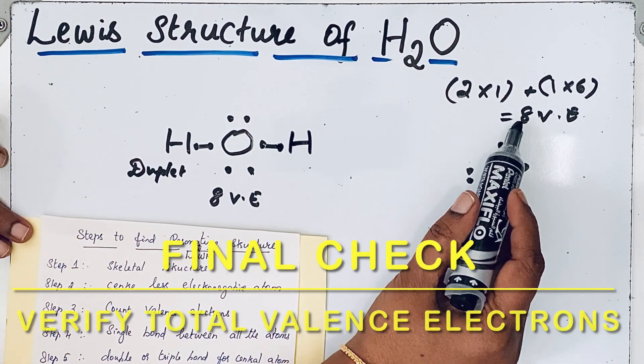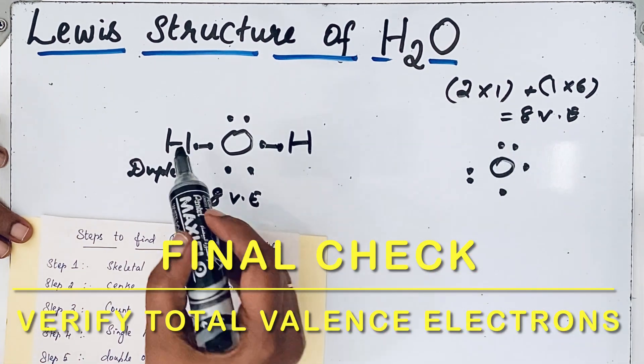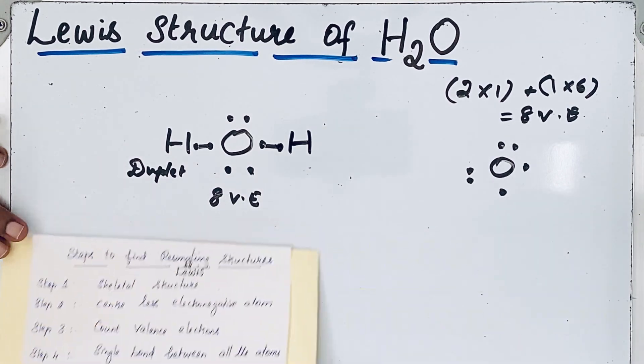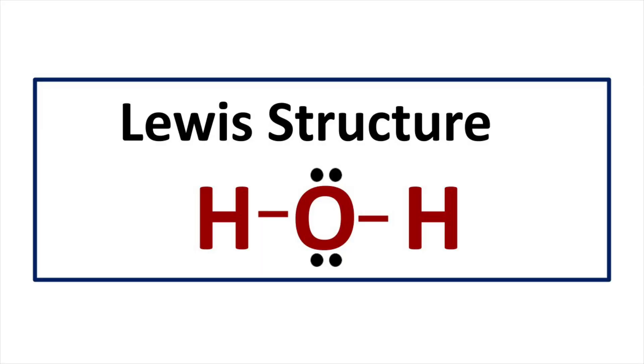Now count to verify that eight valence electrons are present. Two, four, six, eight electrons are present. This is the correct Lewis structure of the H2O molecule.